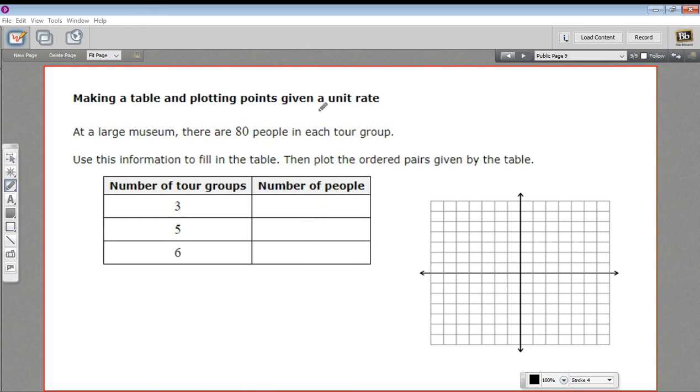In this problem, we are being given what's called a unit rate. A unit rate is something like miles per hour to determine how fast a car is going, or miles per gallon to determine how much fuel it uses. It gives you a number of something per unit, per one of the other thing.